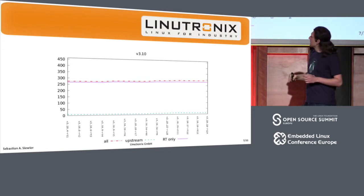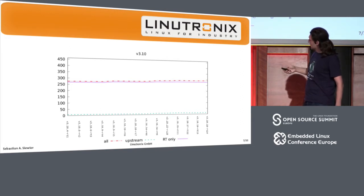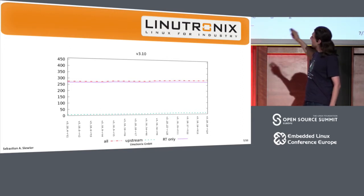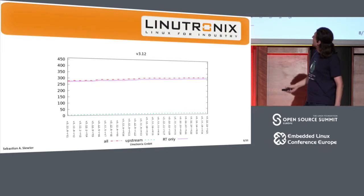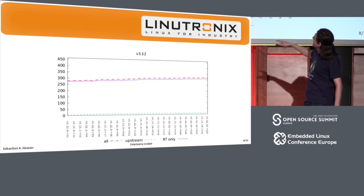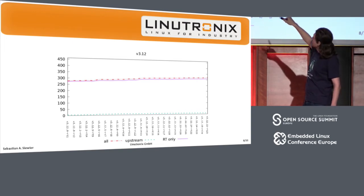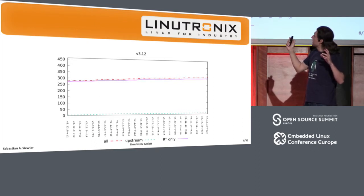If you look at the 3.10 cycle, you will see there's almost no development at all. It's mostly a steady line — back then the project was unfunded, so I basically tried to just make it work. After 3.10 we went to 3.12. It's almost the same, except I got way more releases. The blue line is rising, which means I added more and more patches to the RT-only queue.